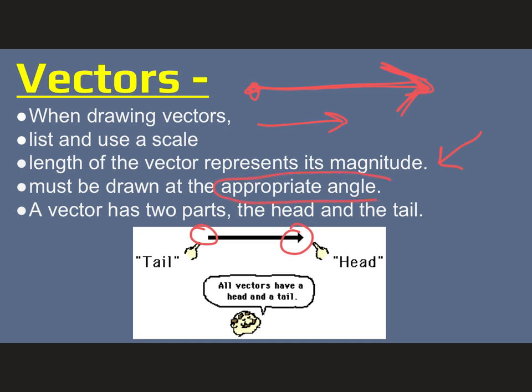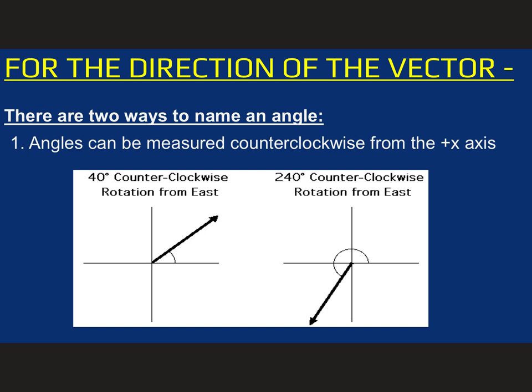So if there's an angle, we have to draw it at the appropriate angle. When we talk about vectors and the angle, there's two ways we can do it. One of the ways is just counterclockwise from the x-axis. So for example, this one is just 40 degrees because it's 40 degrees north of the east line. But if it was further than 90 degrees and went all the way around, this would rotate at 240 degrees from the east line.